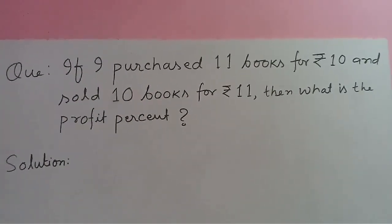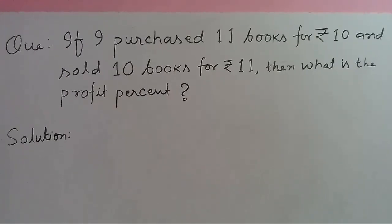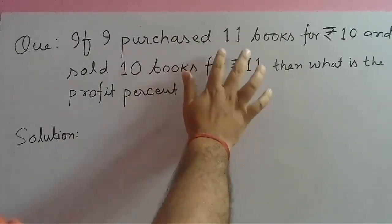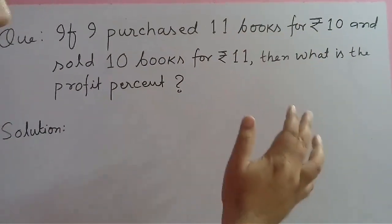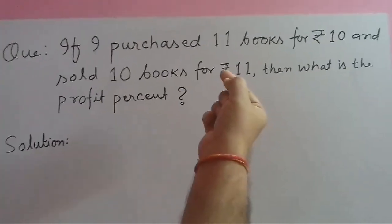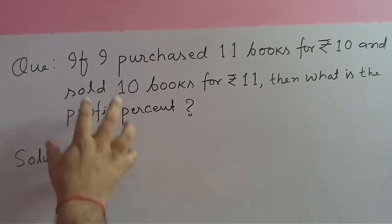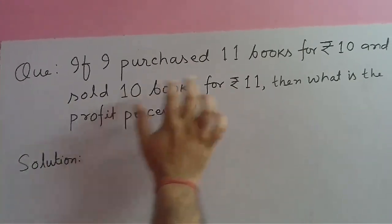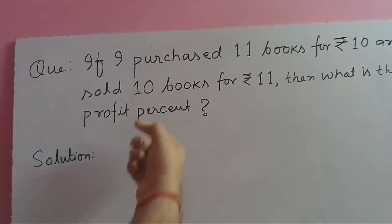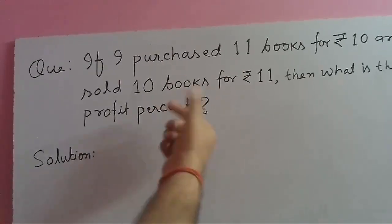In general, we solve it: cost price of 11 books is rupees 10. What will be the cost price of one book? Selling price of 10 books is rupees 11. So what is selling price of one book?